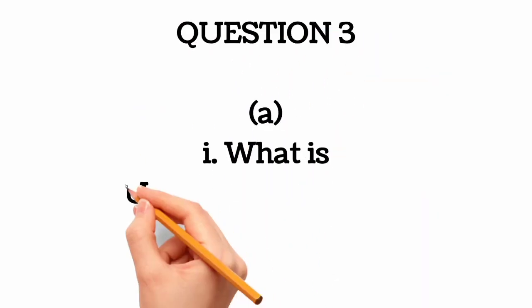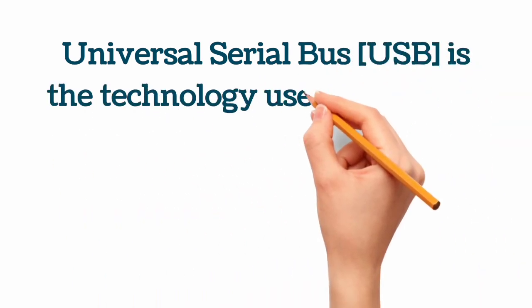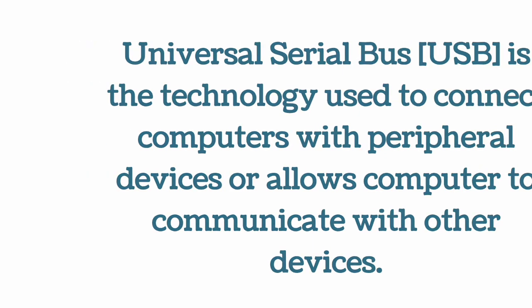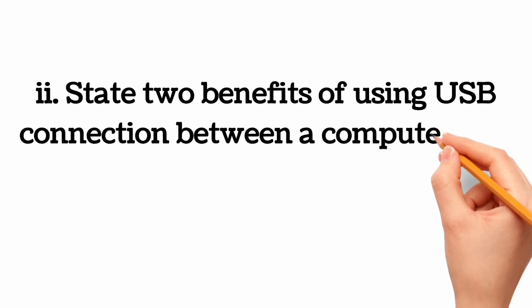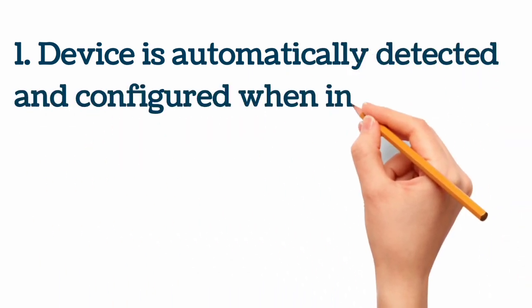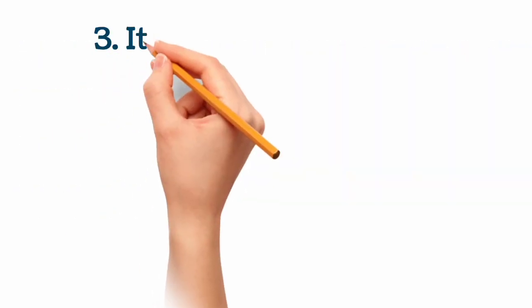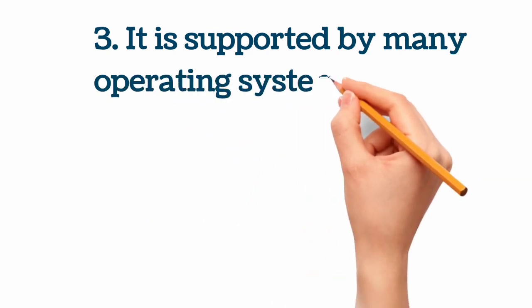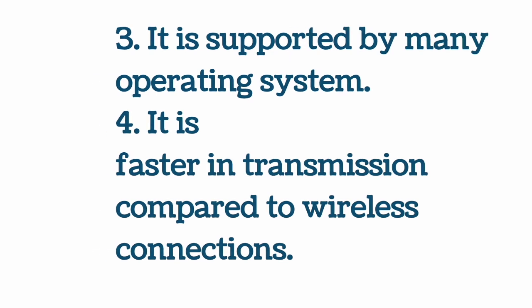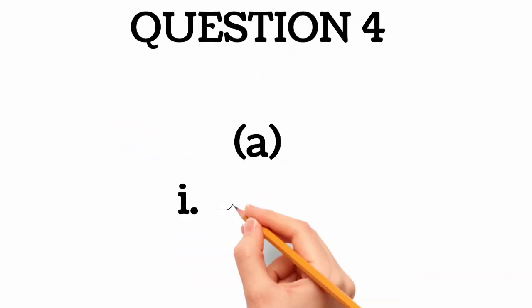Question 3a part i: what is Universal Serial Bus (USB)? Universal Serial Bus is the technology used to connect computers with peripheral devices or allows a computer to communicate with other devices. Part ii: two benefits of using USB: one, the device is automatically detected and configured when initially inserted or attached; two, it supports multiple data transmission speeds; three, it is supported by many operating systems; four, it is faster in transmission compared to wireless connections; five, it supports multiple device connections.